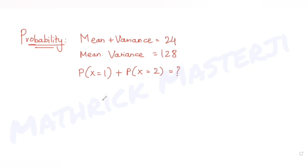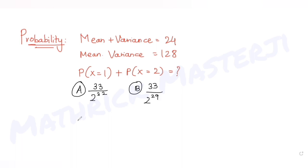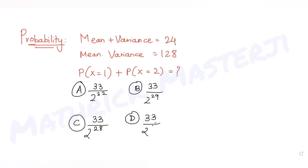The answer choices given are: 33 over 2 raised to 32, second choice 33 over 2 raised to 29, third 33 over 2 raised to 28, and the last answer choice is 33 over 2 raised to 27. We need to figure out which one is correct.